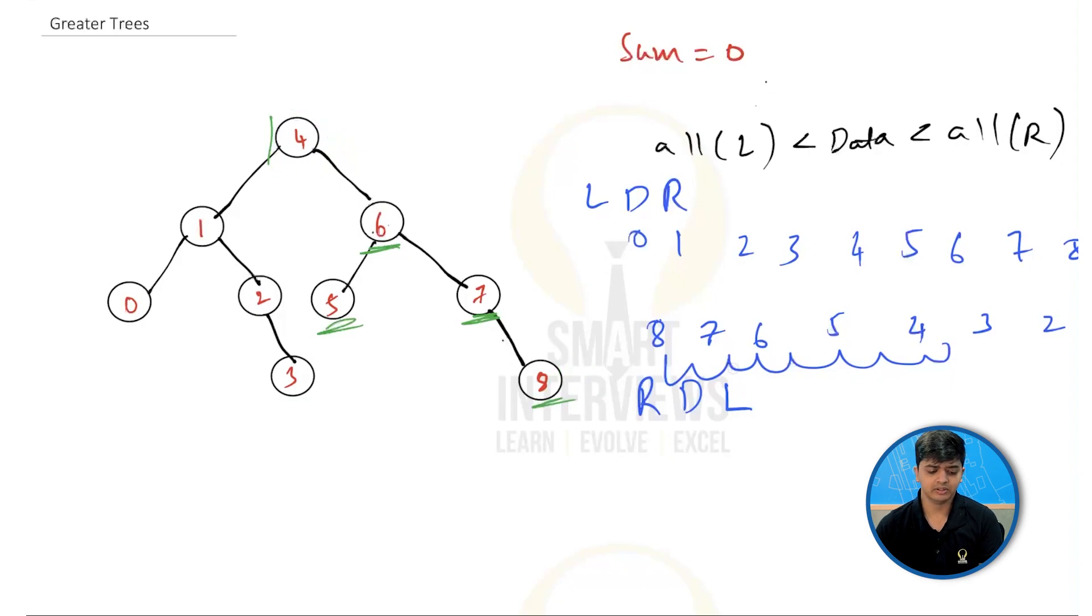So what will happen? Initially, sum is going to be 0. Now, let's start with the first element, which will be 8. I'm going to add 8 to the sum, and then I'm going to change the value of 8 to whatever the sum is.